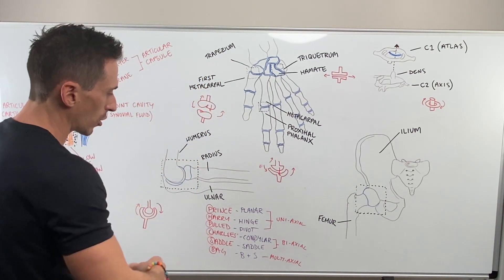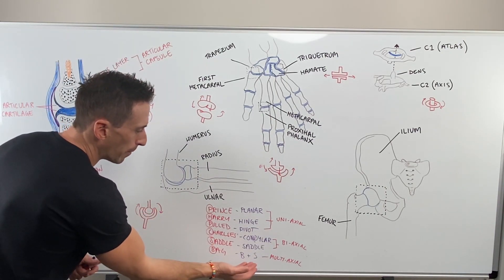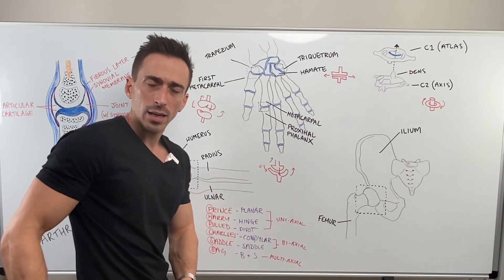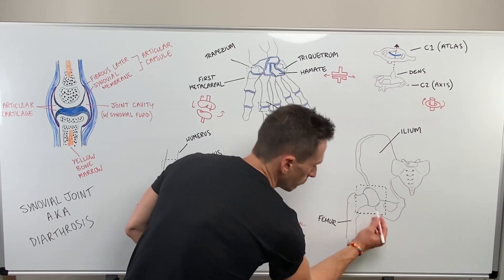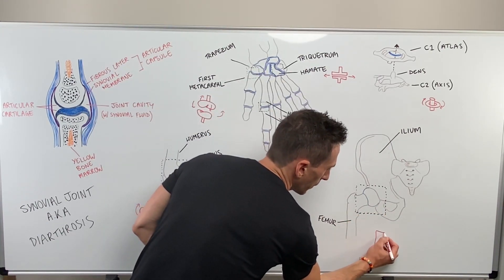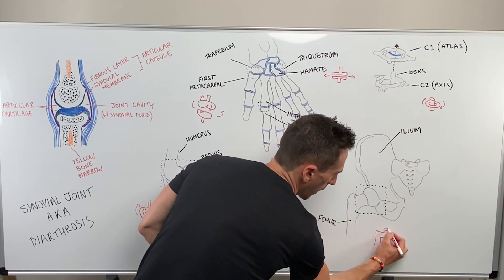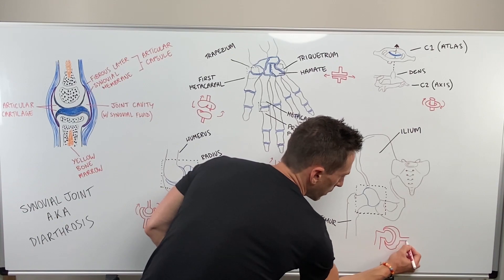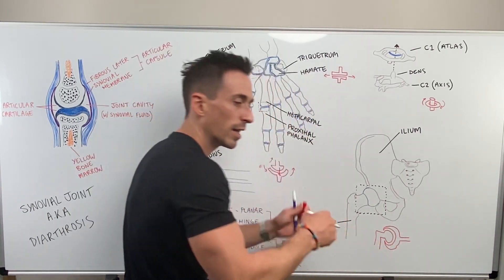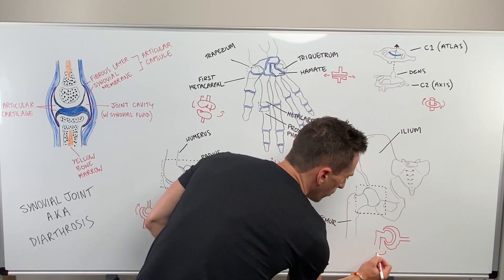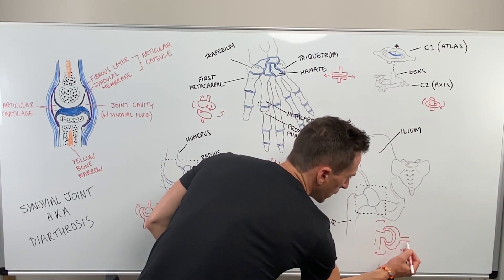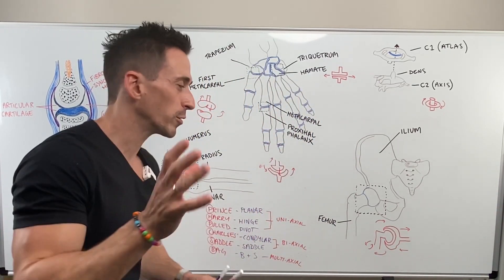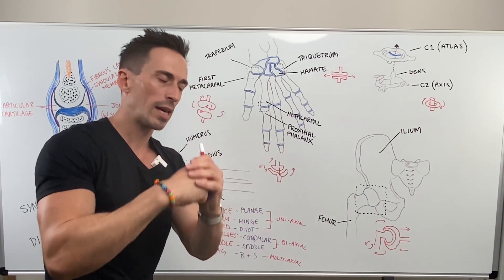Now we move on to the last synovial joint type: the multiaxial ball and socket joint. The example is the hip, where the femur articulates into the hip joint. It's a nice deep joint, which gives it room for movement and makes it quite strong. It doesn't just move in two planes — it moves in many planes. This is a multiaxial joint.